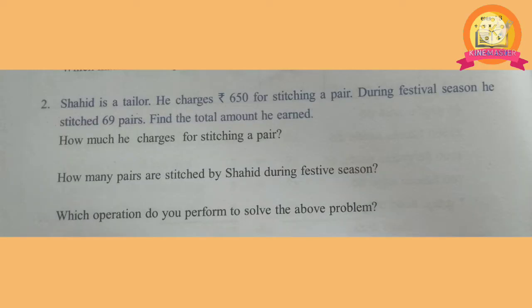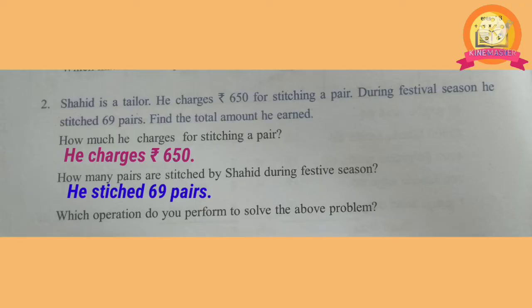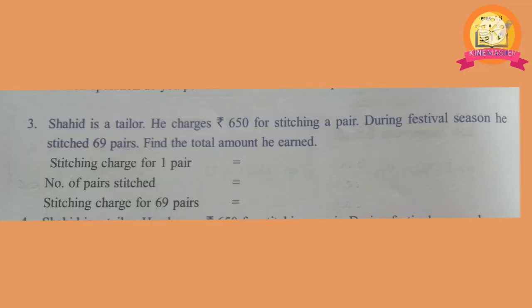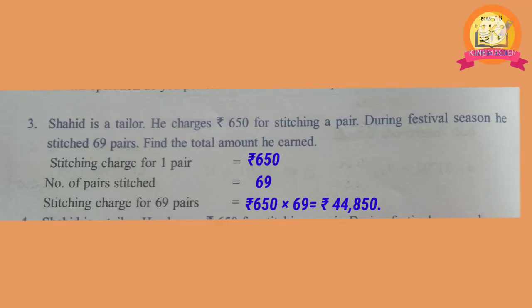He charges 650 rupees for stitching a pair. He stitched 69 pairs during the festive season. Stitching charge for 1 pair is 650 rupees. Number of pairs stitched is 69. To get the stitching charge for 69 pairs, multiply 650 with 69: we get 44,850 rupees. Therefore, stitching charge for 69 pairs is equal to 44,850 rupees.